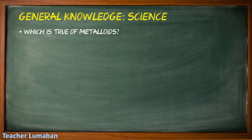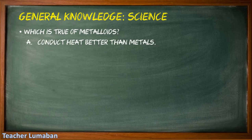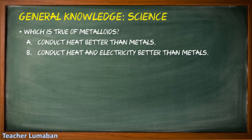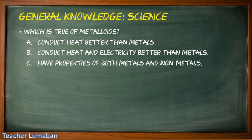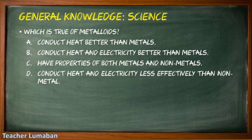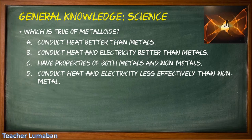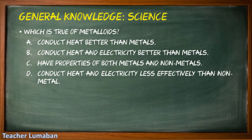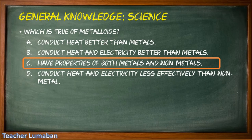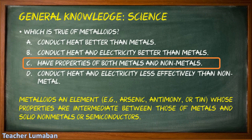Which is true of metalloids? Letter A: conduct heat better than metals, Letter B: conduct heat and electricity better than metals, Letter C: have properties of both metals and non-metals, Letter D: conduct heat and electricity less effectively than non-metals. The correct answer is Letter C: have properties of both metals and non-metals. A metalloid is an element (e.g., arsenic, antimony, or tin) whose properties are intermediate between those of metals and solid non-metals, or semiconductors.